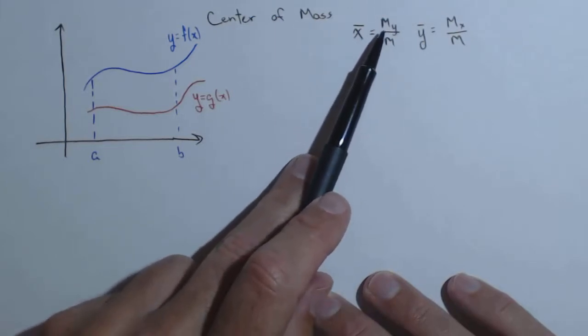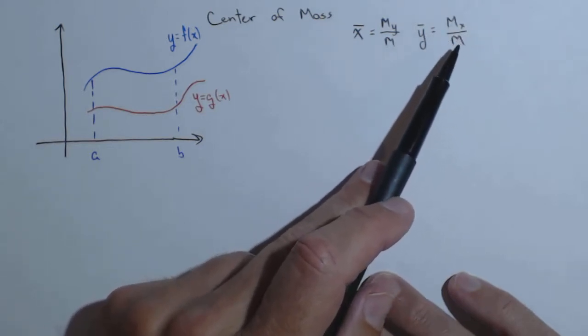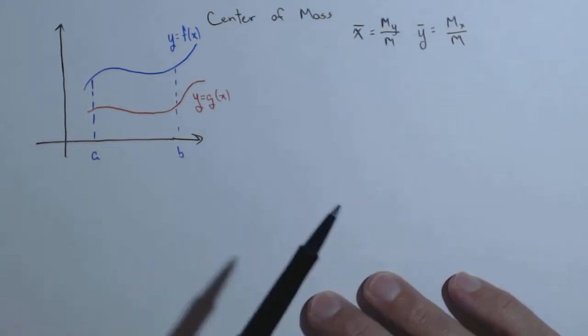So, x bar is the moment of the tendency to go around the y-axis divided by the total mass. Y bar is the moment, sum of the moments around the x-axis, divided by the total mass.